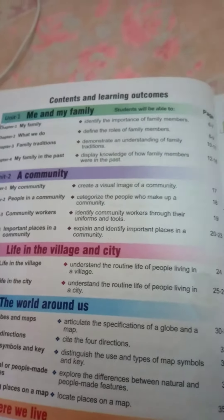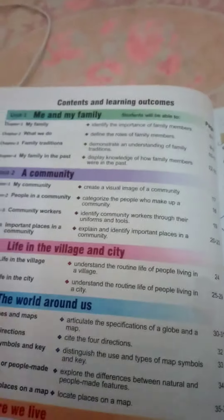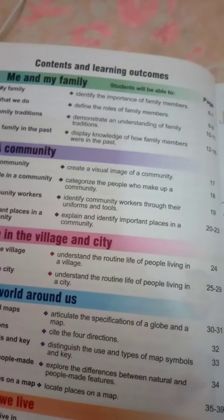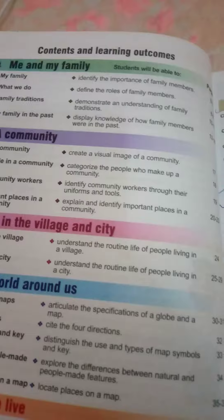Unit two is about 'Our Community.' Community means a number of people living together — that is called a community. Unit three is 'Life in the Village and the City.' Unit four is 'The World Around Us.' This book has very interesting chapters.